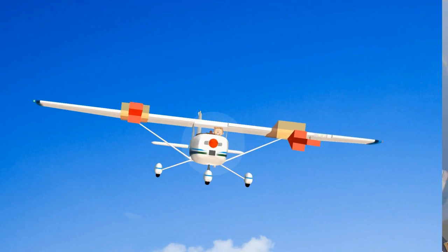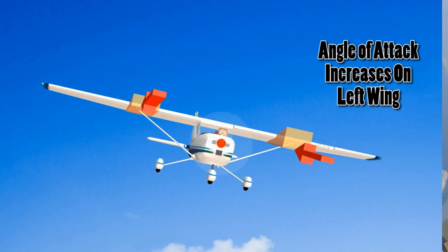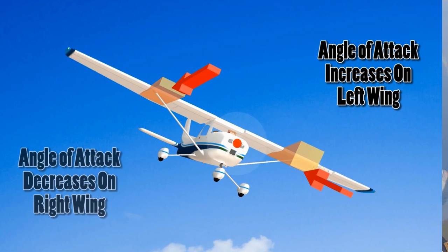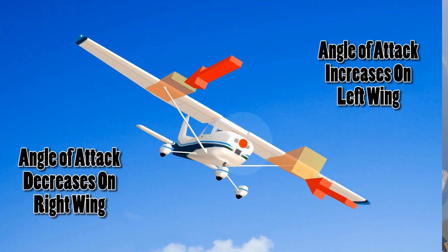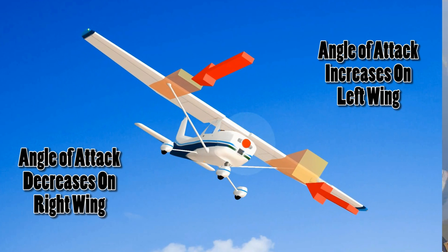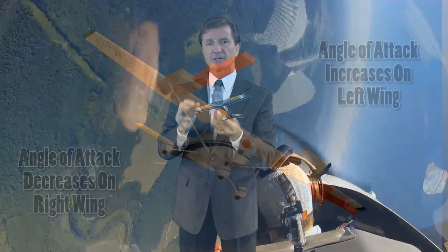And here's the key point: if the wing goes down, then the relative wind strikes the wing at a larger angle and the wing's angle of attack increases. If the wing goes up, then its relative wind strikes the wing at a smaller angle and its angle of attack actually decreases.